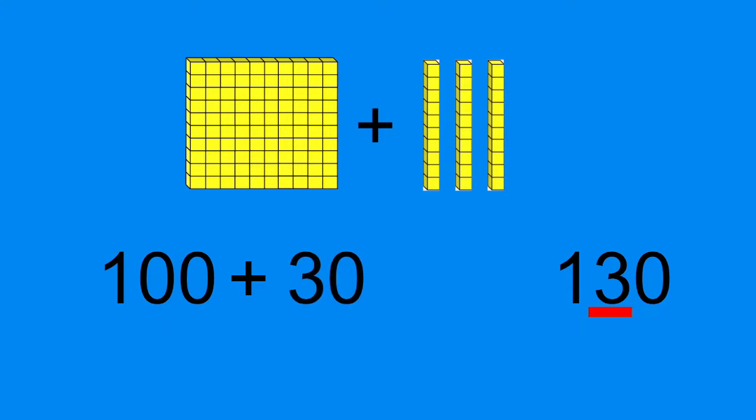Are we going to add that to anything else? 100 plus 30 equals 130. Today, we have been writing in expanded form.